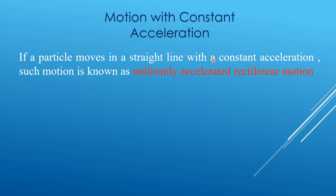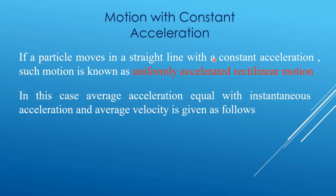If a particle moves in a straight line with constant acceleration, such motion is known as uniformly accelerated rectilinear motion. In this case, average acceleration equals instantaneous acceleration, and average velocity is given as one-half times (u + v).